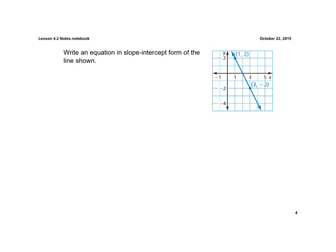Now it says write an equation in slope-intercept form of the line shown. Now again, they give us two points, and we could also just make a triangle here and count squares and go 1, 2,